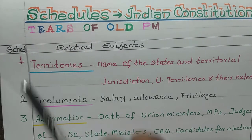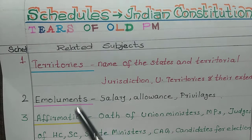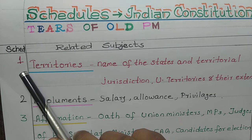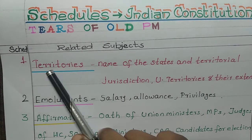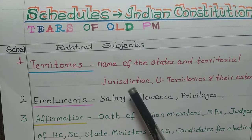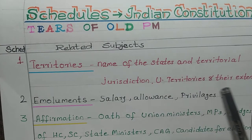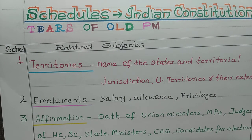First schedule: the keyword is territories. First schedule consists of the name of the states, their territorial jurisdiction, union territories, and their extent.